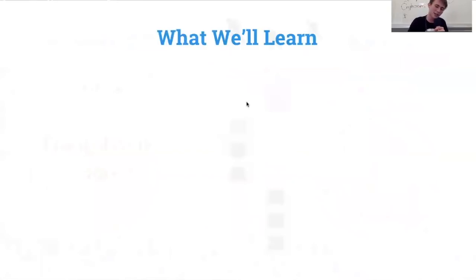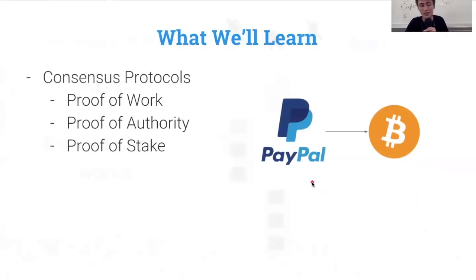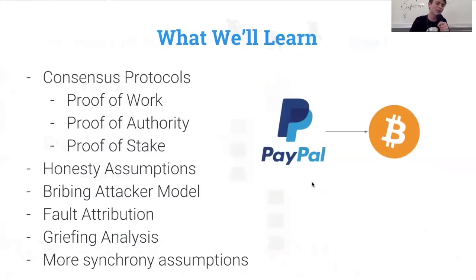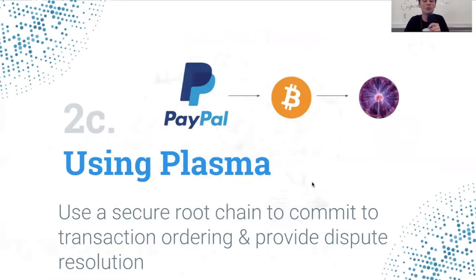What we'll learn during this consensus protocol section of the course is consensus protocols, and this includes proof of work, proof of authority, proof of stake, honesty assumptions, the bribing attacker model, fault attribution, griefing analysis, and even more synchrony assumptions. This is what we'll do when we turn PayPal into something like Bitcoin or Ethereum. Now we'll take it a step further and add to the security of the chain by using Plasma. We'll go from PayPal to Bitcoin, then Bitcoin to Plasma.